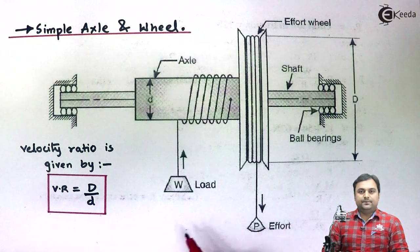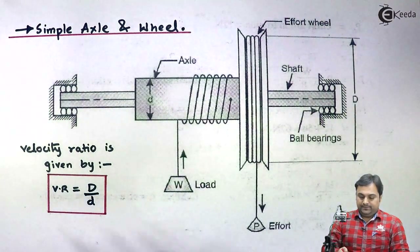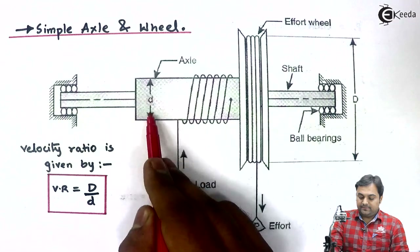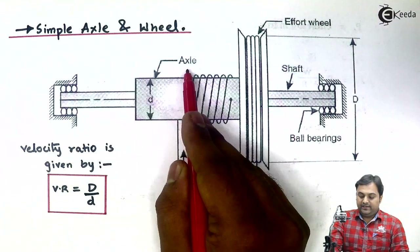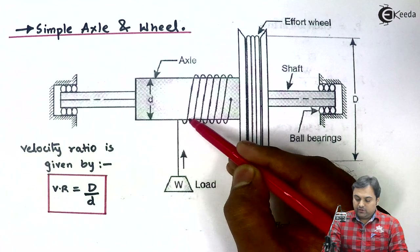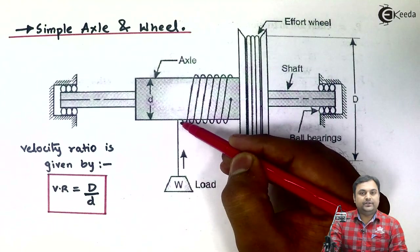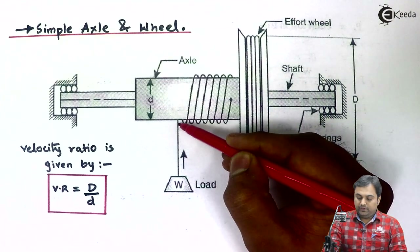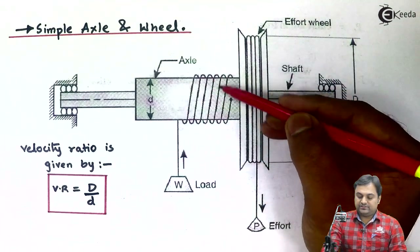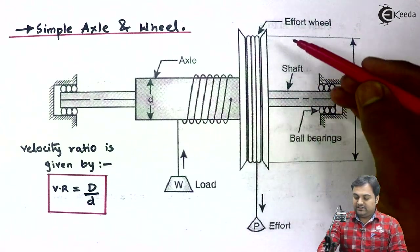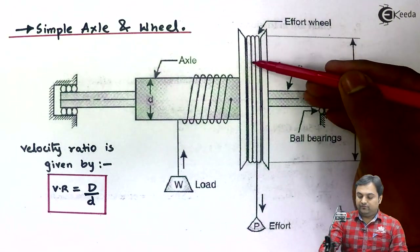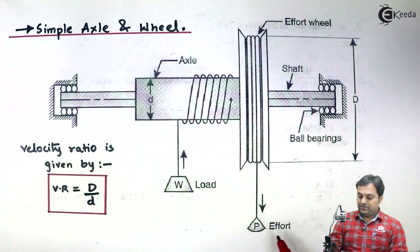The axle is a rotating shaft. In the diagram, the member having diameter small d is called the axle. On the axle, a load is mounted — a rope or string is wrapped around the axle to carry the load. After the axle, we have one wheel called the effort wheel.